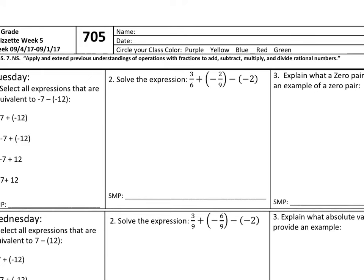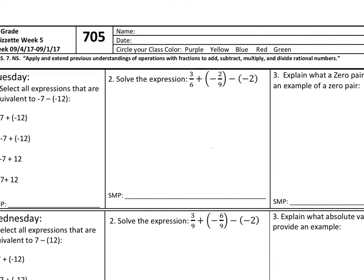Good morning or good afternoon, Tigers. Today we'll be watching a Quizette video on Quizette 705. As always, please make sure that you write your last name, comma, first name, today's date, and that you circle the appropriate class color. Today I'm going to say that I'm purple.